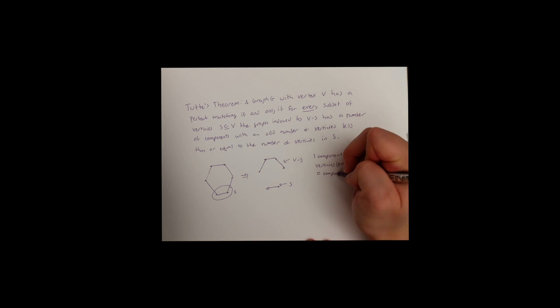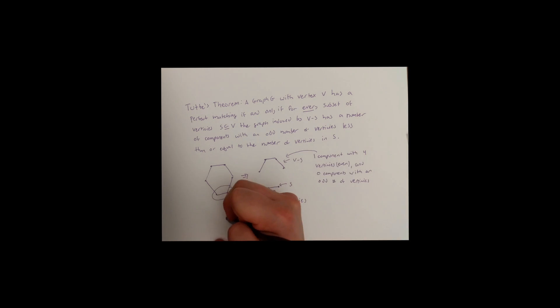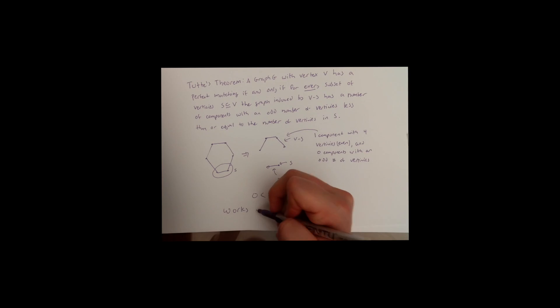Therefore, since zero is less than two, two being the number of vertices we removed in our initial S, we can prove that the graph has a perfect matching. This works for any subset S in a graph with a perfect matching.